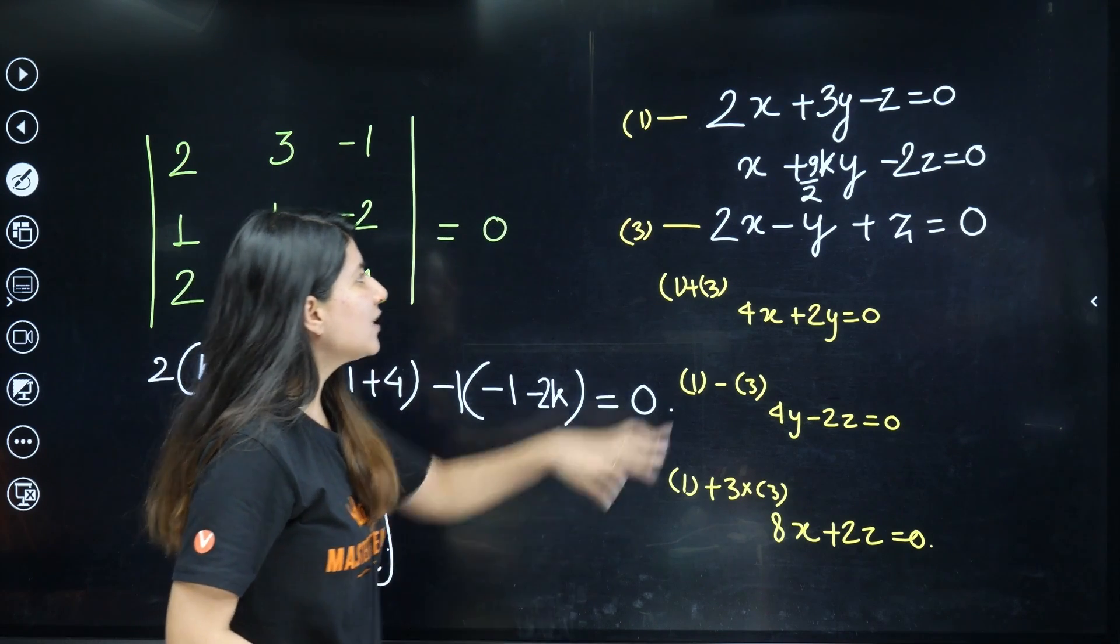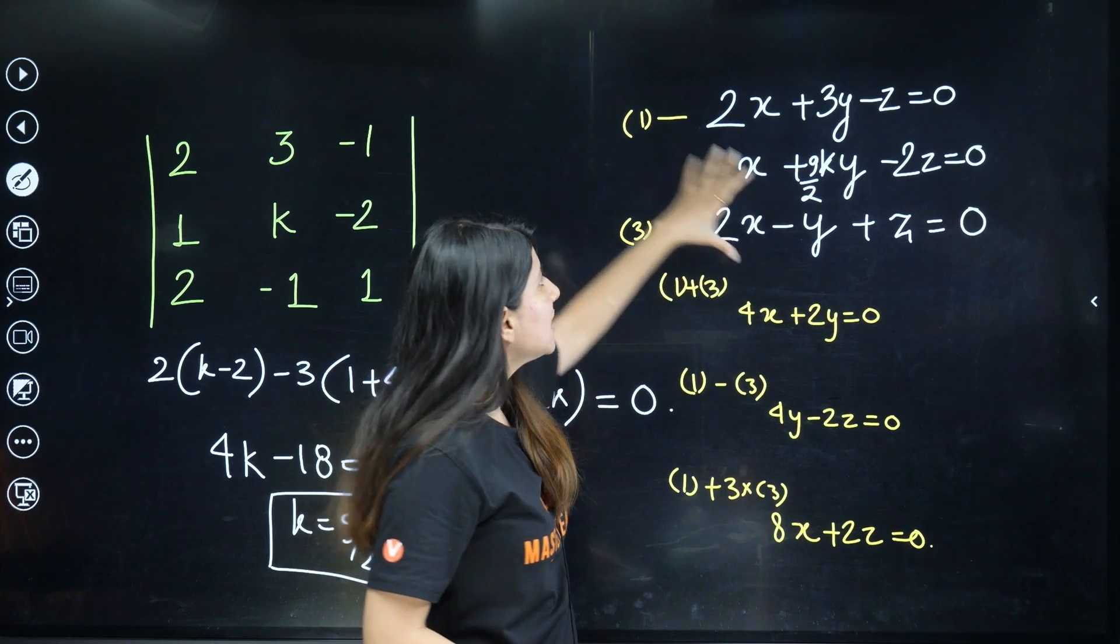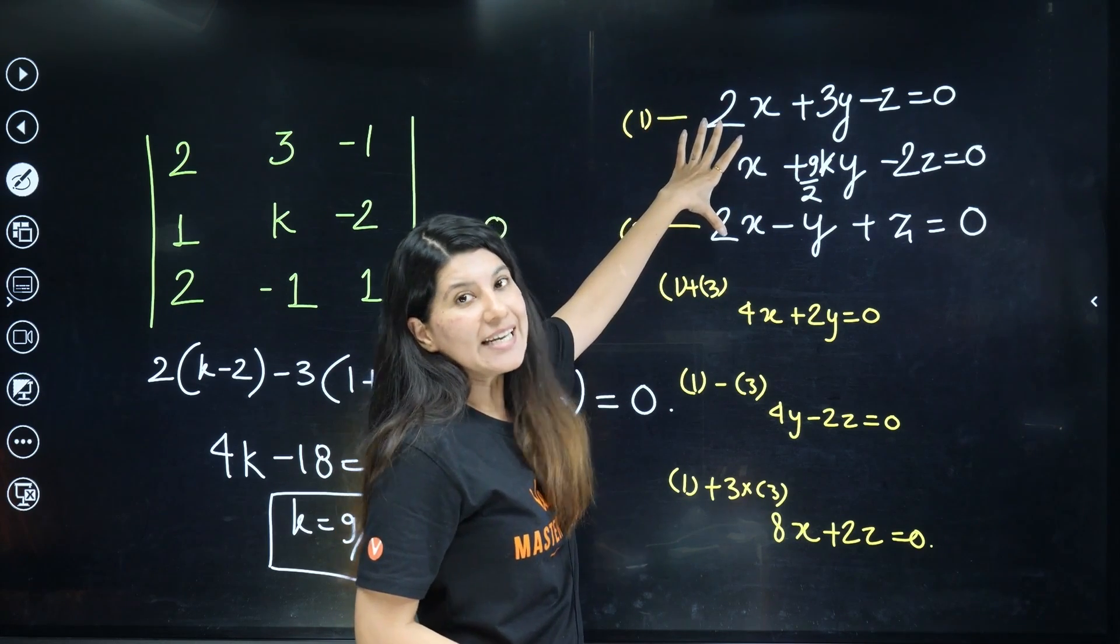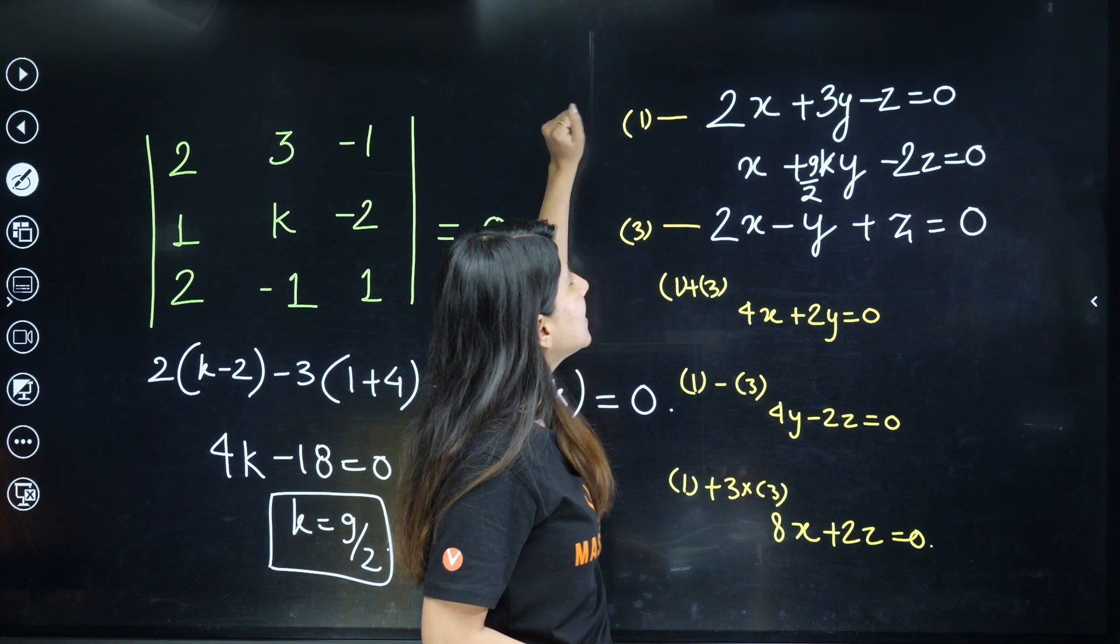So 9/2 is the value of k and you need to figure out x/y first. For obtaining x/y, you need to eliminate z. How to eliminate z using these three equations? Just simply add first and third.